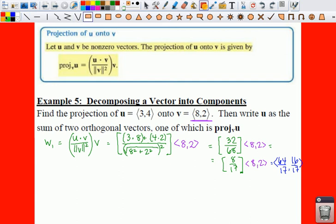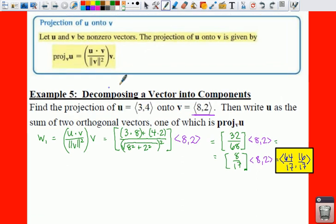Now in order to figure out, if we had to write these as the sum of two orthogonal vectors, then we have to find out what your W sub 2 is. Remember to find your W sub 2, that is just taking your U minus W sub 1. Our U vector is ⟨3,4⟩ minus ⟨64 over 17, 16 over 17⟩.